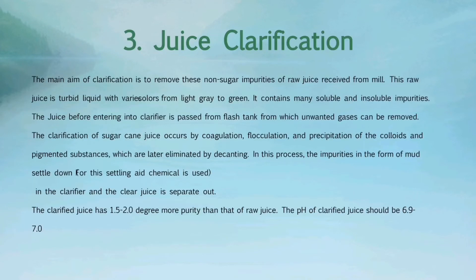After that, the juice clarification process is triggered. The main aim of clarification is to remove non-sugar impurities of raw juice received from the mill. This raw juice is a turbid liquid with various colors from light gray to green, and it contains many soluble and insoluble impurities. The juice before entering into the clarifier is passed through a flash tank from which unwanted gases can be removed. The clarification of sugar cane juice occurs by coagulation, flocculation, and precipitation of colloids and pigmented substances, which are later eliminated by decanting. The impurities in the form of mud settle down in the clarifier and the clear juice is separated out. The clarified juice has 1.5 to 2 degrees more purity than that of raw juice, and its pH should be 6.9 to 7.